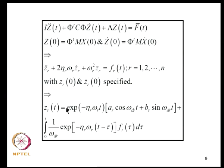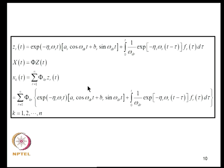Assuming Phi-transpose·C·Phi is diagonal, we take the analysis to its logical end. Initial conditions are obtained through the modal relation, and the equation for each generalized coordinate becomes a single-degree-of-freedom system. We solve this family of SDOF systems in terms of the impulse response function with integration constants A_R and B_R related to Z_R and Z_R-dot. Then X is recovered using X = Phi·Z, since engineering decisions must be made in X-space. The K-th element of X written in summation form completes the solution.